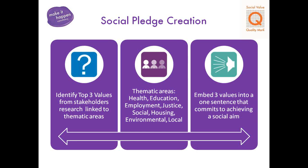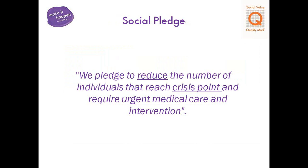Once you know what your stakeholders value, convert them into pledges — essentially outcomes. Pledges might say 'we pledge to improve the lives of local residents'. You can create these social pledges based on the top three values from individual stakeholders, placing them into systematic areas such as health and education, and embedding them into one sentence as a key external message. For example: 'to reduce the number of individuals who reach crisis point and require urgent medical care and intervention'. This becomes your key marketing message — your unique selling point — and more importantly, this is what you measure. Nothing else.